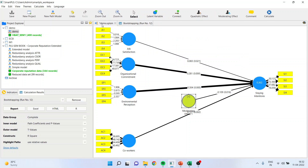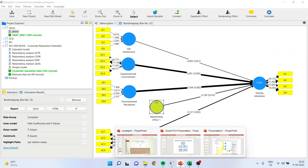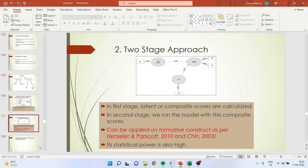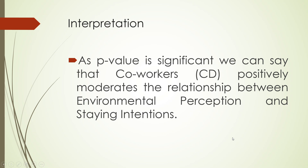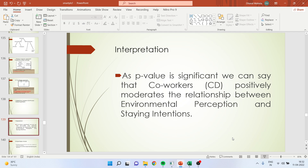After carrying out this analysis, normally we go for slope analysis. How do we write this in a paper? Since the p-value is significant, we can say that co-workers positively moderates the relationship between environmental perception and staying intention. Normally we go for slope analysis in the case where the moderating variable is continuous.